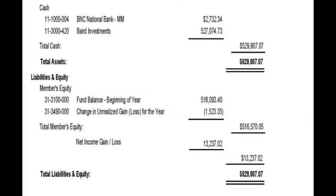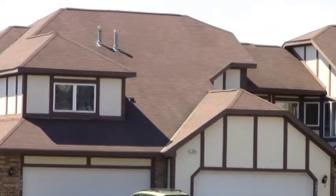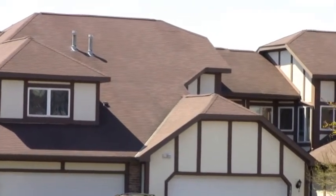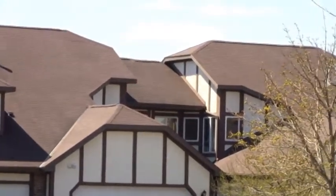Your association has two types of funds that your financial statements report on. One is your operating fund and the other is your replacement fund. Your operating fund is for day-to-day operations such as rubbish removal, snow removal, and lawn care. Your replacement fund is for future expenditures that are large in nature, such as replacing roofs, doing siding, and any capital improvements you may want done for your association.